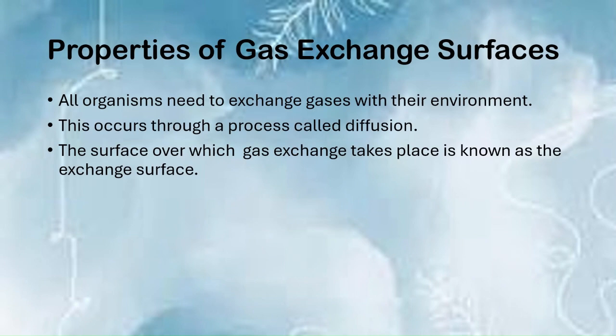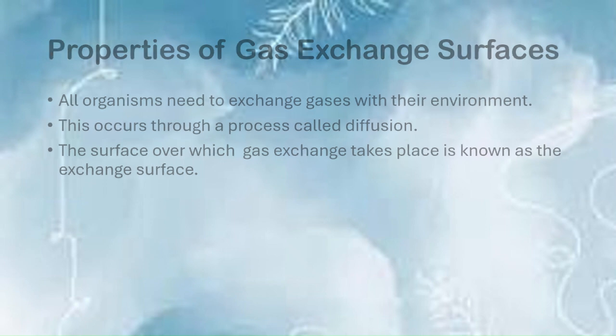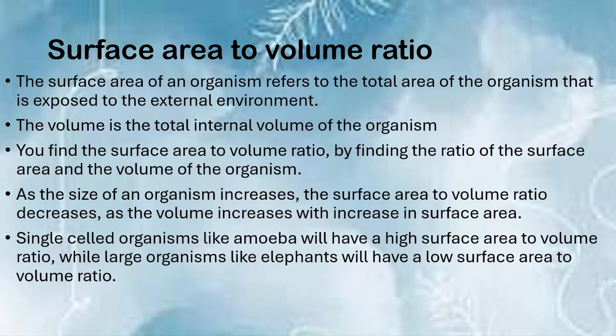All organisms need to exchange gases with their environment through a process called diffusion. The surface over which gas exchange takes place is known as the exchange surface. The surface area refers to the total area exposed to the external environment, and the volume is the total internal volume. As organism size increases, the surface area to volume ratio decreases. Single-celled organisms like amoeba have a high SA:V ratio, while large organisms like elephants have a low SA:V ratio.